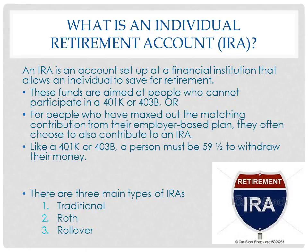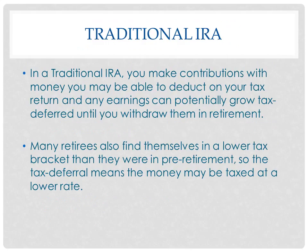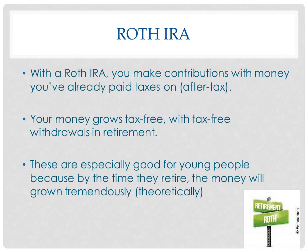There are three types of IRAs: the traditional, the Roth, and the rollover. With a traditional IRA, you make contributions with money you are able to deduct on your tax return, and any earnings can potentially grow tax-deferred until you withdraw them in retirement — you pay the tax after you retire. Many retirees find themselves in a lower tax bracket than pre-retirement, so the tax deferral means the money may be taxed at a lower rate. For example, if you're making $70,000 a year before you retire and that income is cut in half between your investments and Social Security, you'll be taxed at a much lower rate.